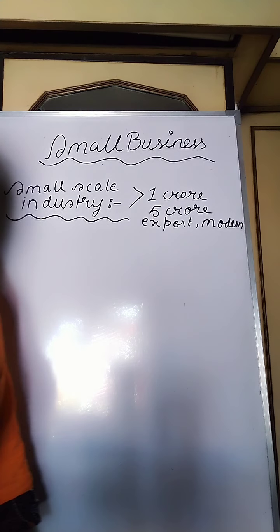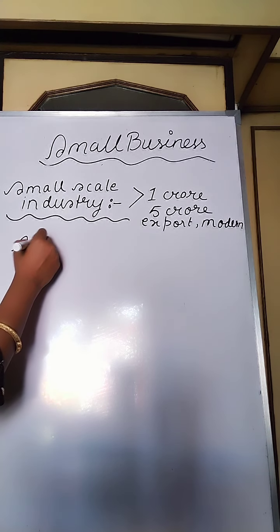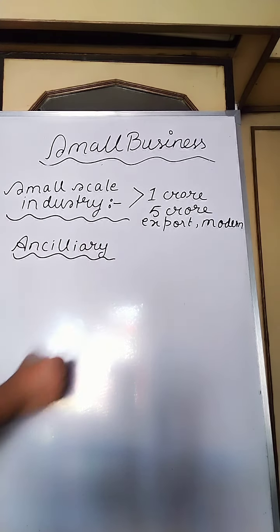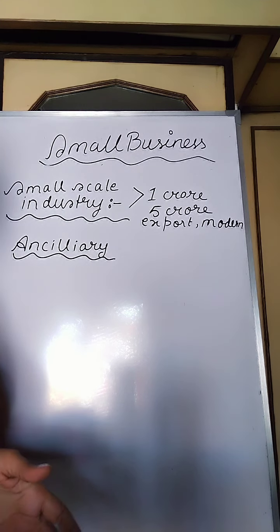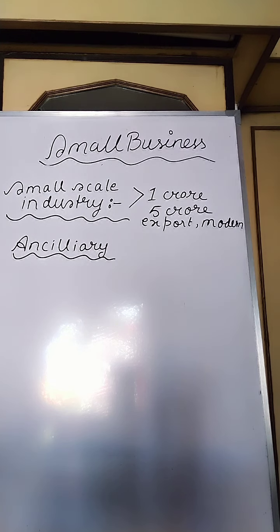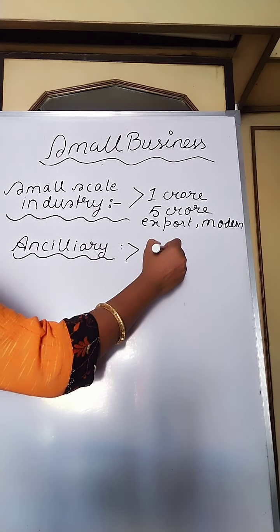The second category is ancillary or small unit. Here, the total investment limit does not exceed 1 crore. The industries must sell not less than 50% of their production to parent units. Ancillary units have assured demand from parent units, and the parent units provide them technical guidance as well as financial help.